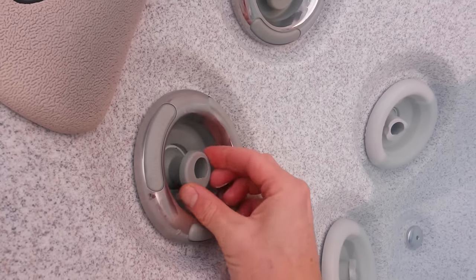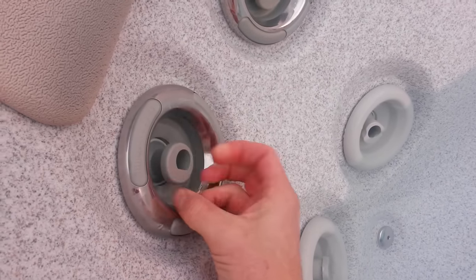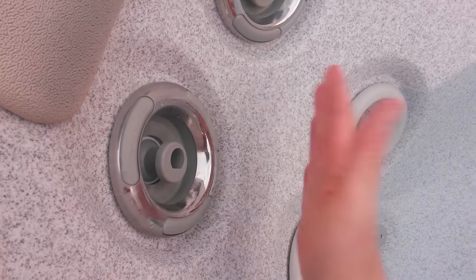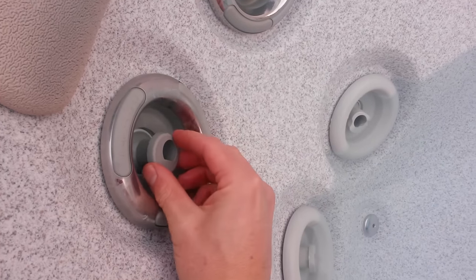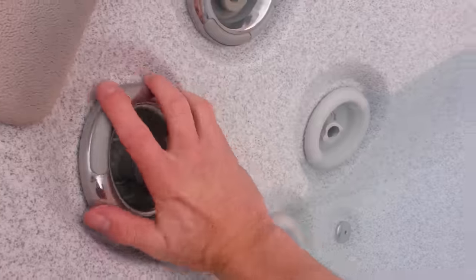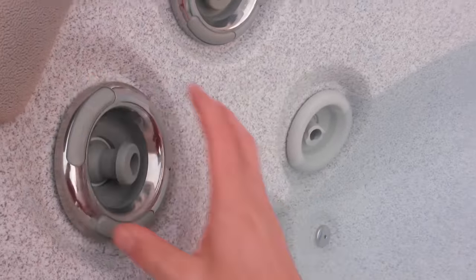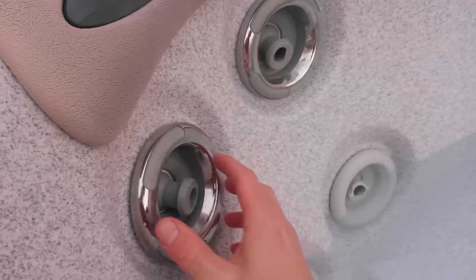On these twirl jets, make sure you move this. If you move it over to the side it'll twirl a lot more than if it's in the middle. In the middle it just becomes a directional jet - flows straight out. But the more over to the side it is, the more it twirls. Make sure they're all the way to the right if you want them on. If you want to direct more flow to a different part of the jacuzzi, make sure you turn the flow off in that area.